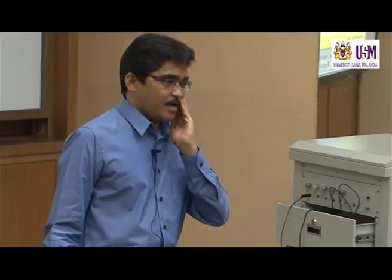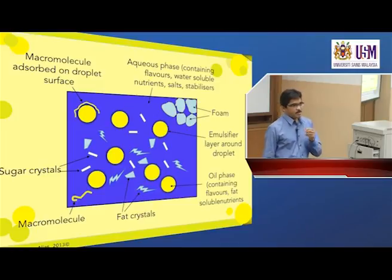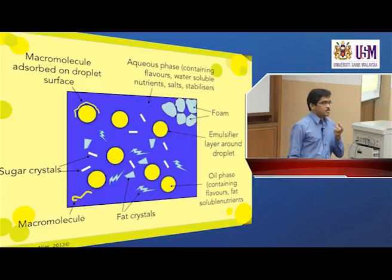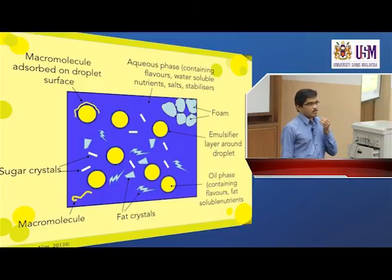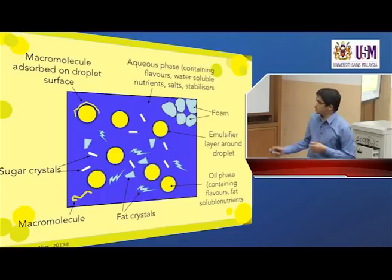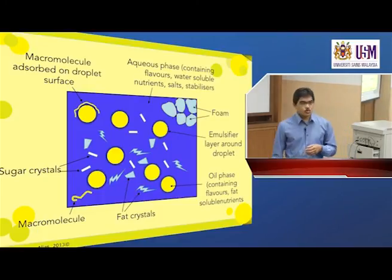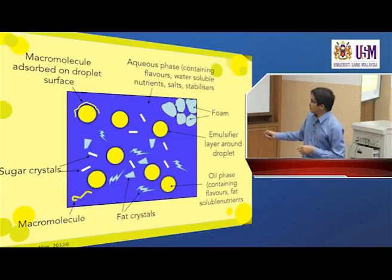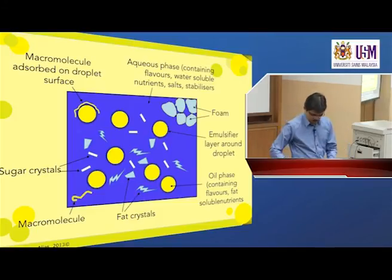Let's use ice cream — the McDonald's ice cream — as an example. The ice cream is described as a complex dispersed system. It is an emulsion as well as a foam. If we use this picture to illustrate ice cream, we take one unit volume of ice cream and put it under the microscope. How would you describe ice cream as a complex dispersed system?